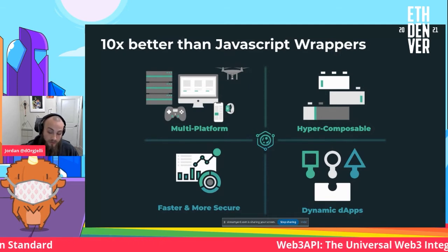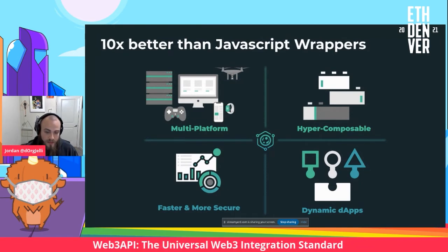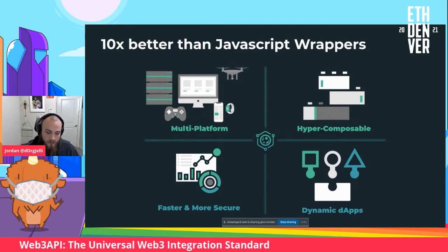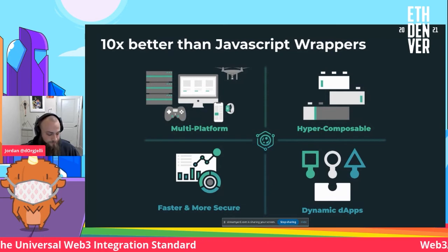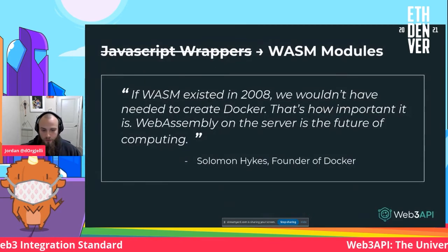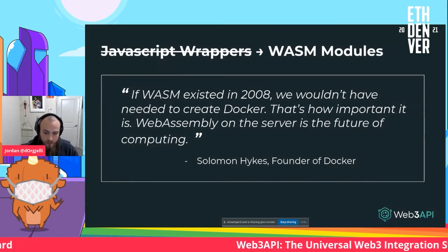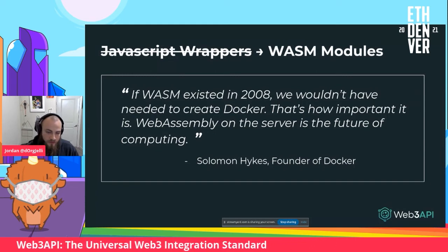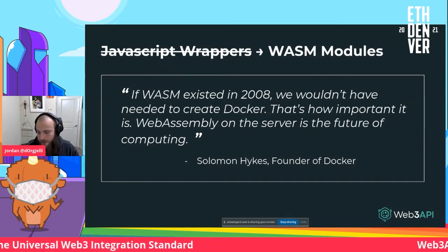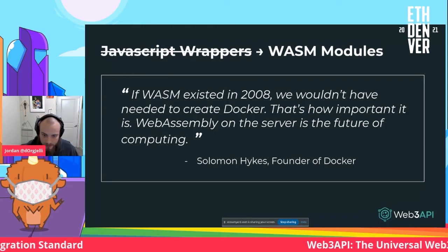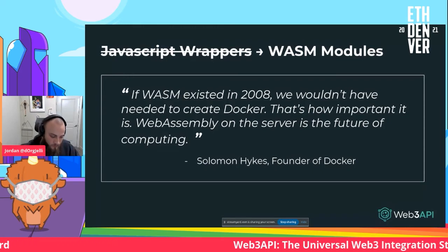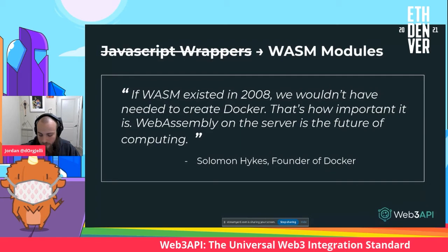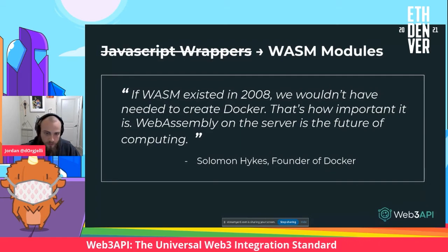This allows you to build dynamic applications through standard interfaces. It's faster and more secure. Here's a quote from the founder of Docker basically saying that if WebAssembly had existed back in 2008 when they first created Docker, they wouldn't have needed Docker. WebAssembly is a great technology that solves a lot of problems in computing.